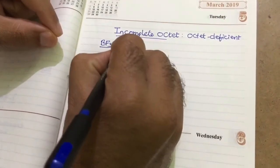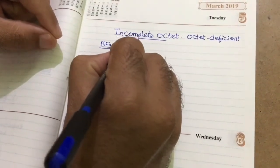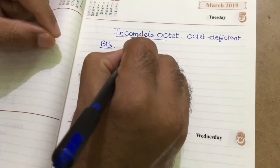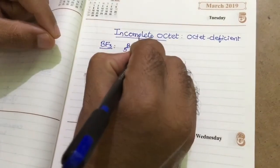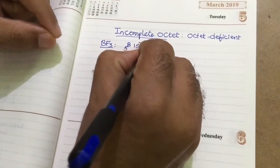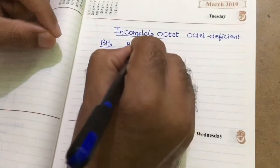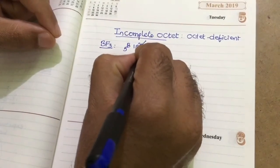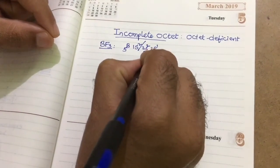Now we know that boron atom atomic number is 5. Its electronic configuration is 1s2, 2s2, 2p1.